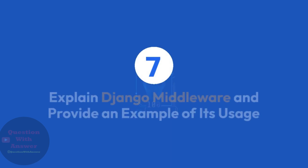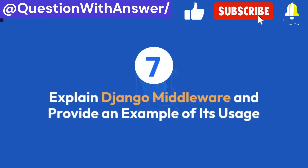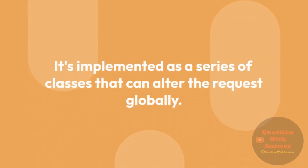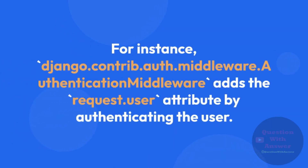Question 7: Explain Django middleware and provide an example of its usage. Answer: Middleware in Django is a way to process requests and responses globally before reaching the view or after leaving the view. It's implemented as a series of classes that can alter the request globally. For instance, django.contrib.auth.middleware.AuthenticationMiddleware adds the request.user attribute by authenticating the user.